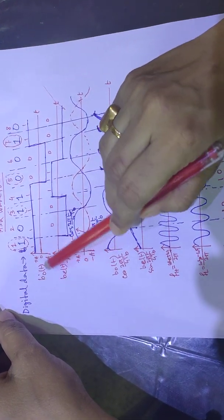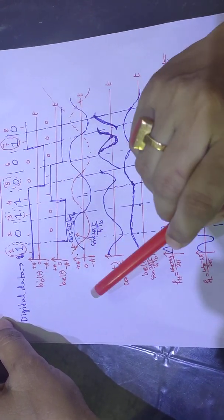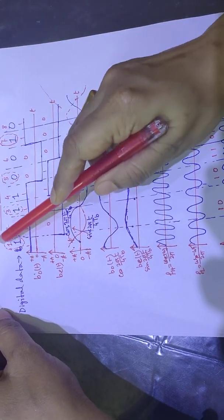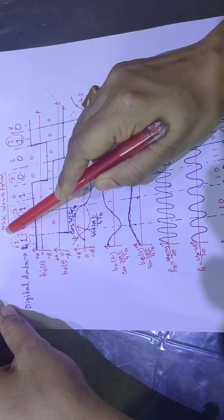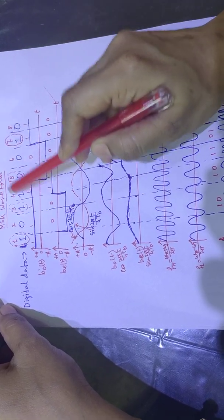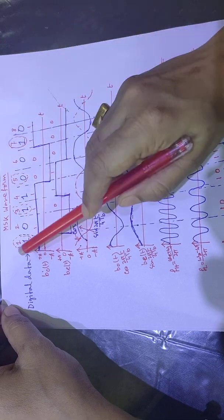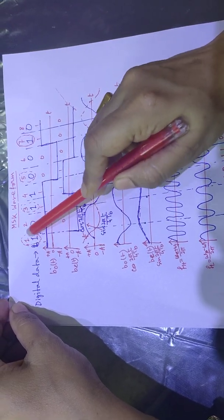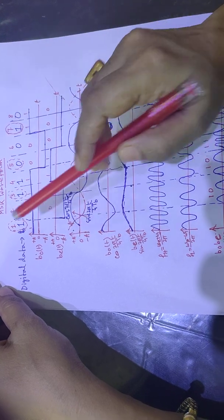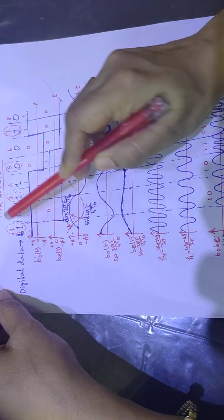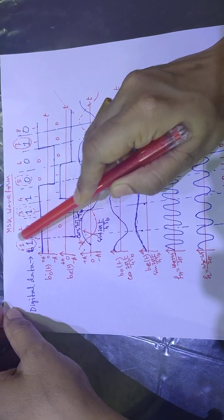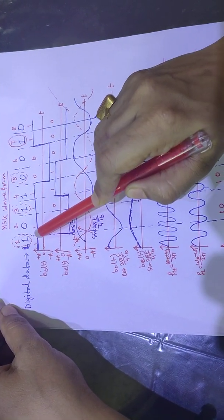Now for the odd stream, it will look like this. For odd numbers — this is 1, 2, 3, 4, 5, 6, 7, 8 — the odd numbers are 1, then 3, then 5, then 7. So for the odd stream, position 1 is 1, so that is 1.